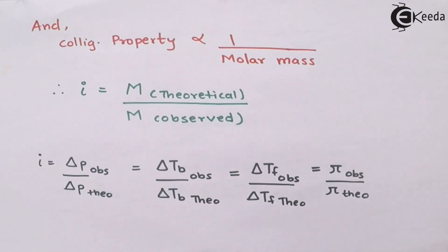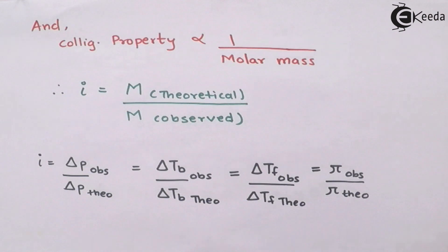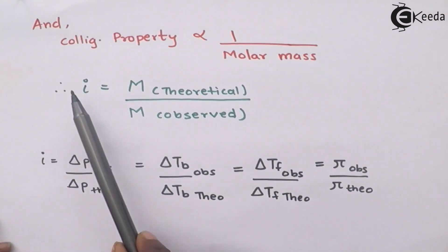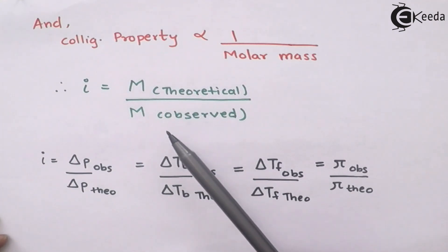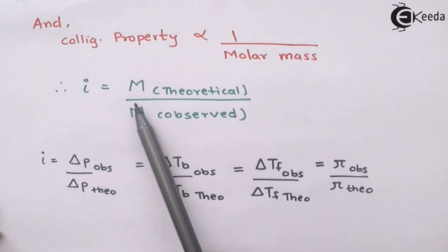We also know that colligative properties are inversely proportional to molar mass. Across all four colligative properties — relative lowering of vapor pressure, elevation of boiling point, depression of freezing point, and osmotic pressure — molar mass is inversely proportional to the colligative property. So in terms of molar mass, i equals M_theoretical divided by M_observed, because they are inversely proportional.